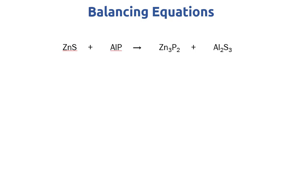In this example we have ZnS plus AlP reacting to make Zn3P2 plus Al2S3. The key to balancing equations is to make it so that both sides — the reactant side on the left of the arrow and the product side on the right of the arrow — have the exact same amount of each type of element. So the first thing you should do when balancing an equation is count everything on both sides.